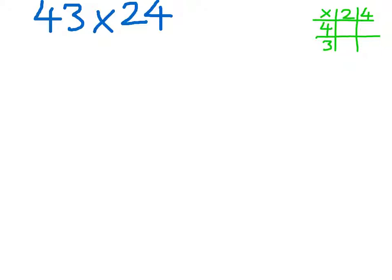First of all, you partition your numbers. So we have 43 becoming 40 and 3. 24 we can make 20 and 4.